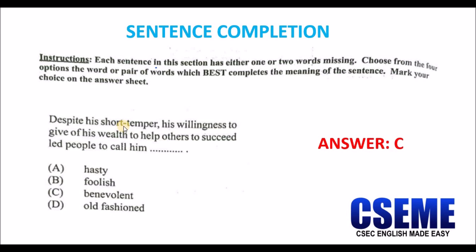Consider this example: 'Despite his short temper, his willingness to give of his wealth to others led people to call him ___.' The options are: hasty, foolish, benevolent, old-fashioned. The answer is C — benevolent. Benevolent means that you give freely, you give willingly, you are very generous.